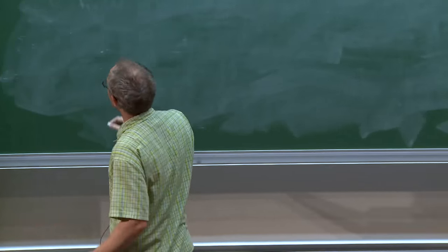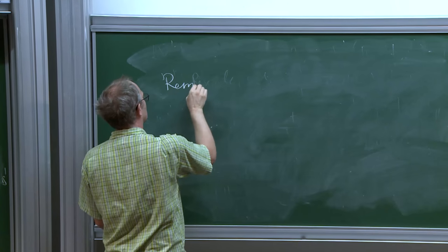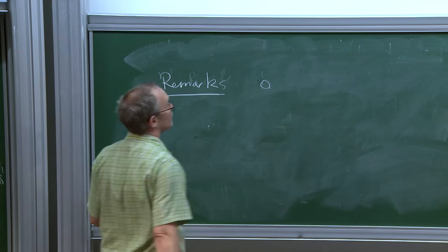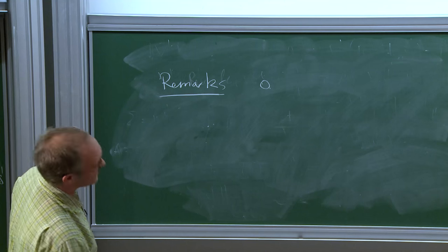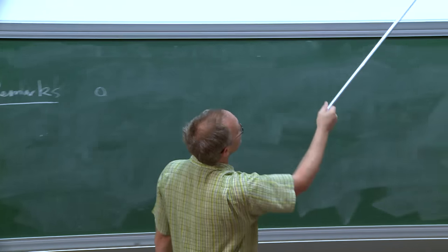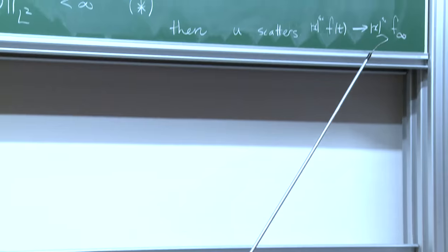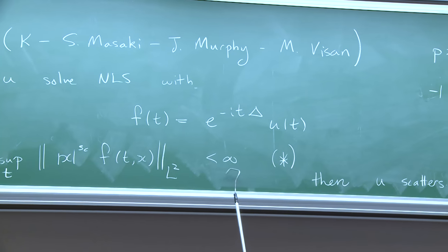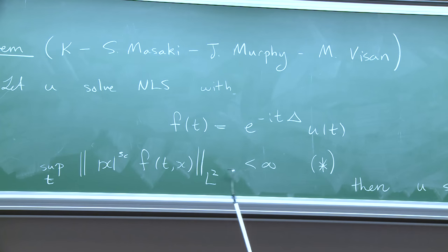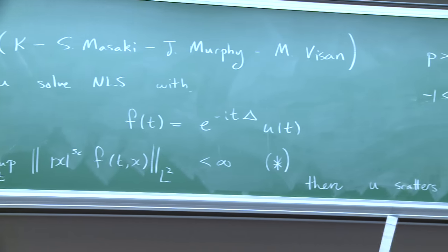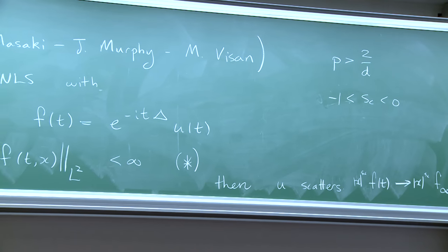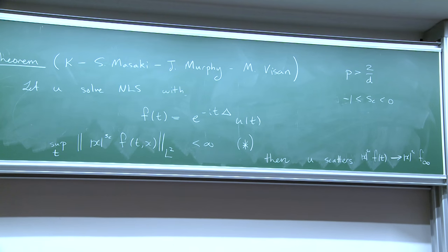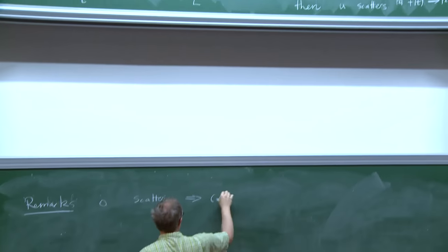The zeroth remark: scattering does imply star. If this thing converges as t goes to plus infinity, then certainly it's bounded in this topology. So scattering clearly implies star. For small data, if I take initial data at time zero in some weighted space, such solutions exist—it's been known for a while.